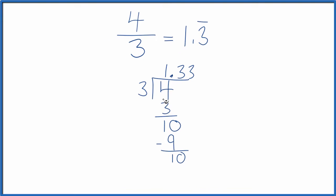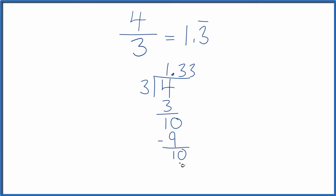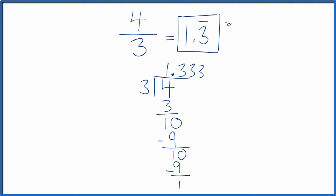And three times three is nine, and again we get one and it just keeps going. That's why we have 1.3333, and we're calling it 1.3 with the bar over the three to show it repeats.